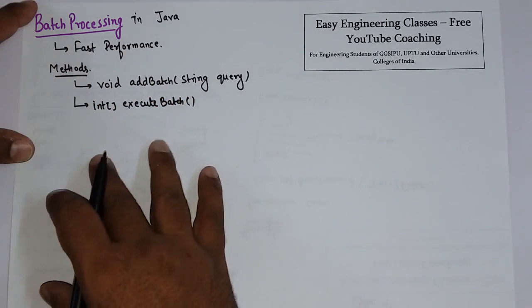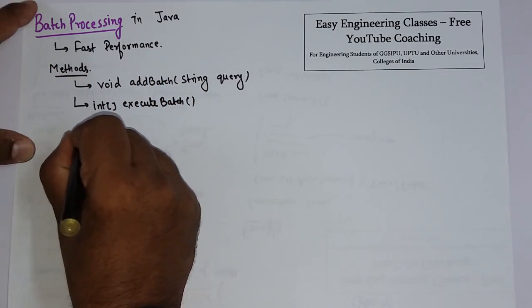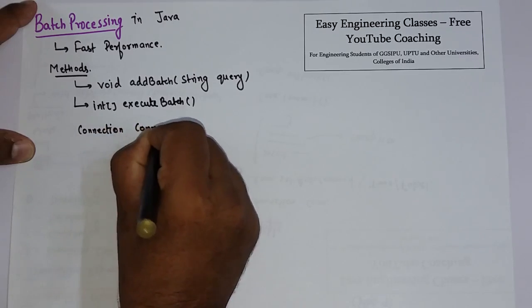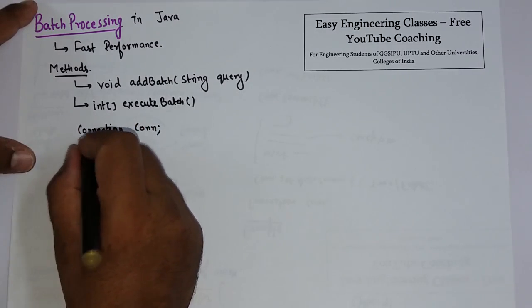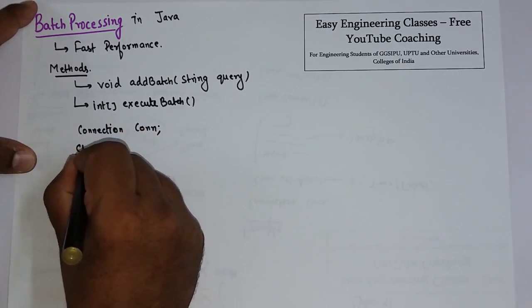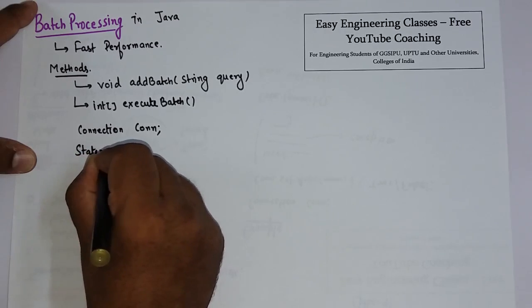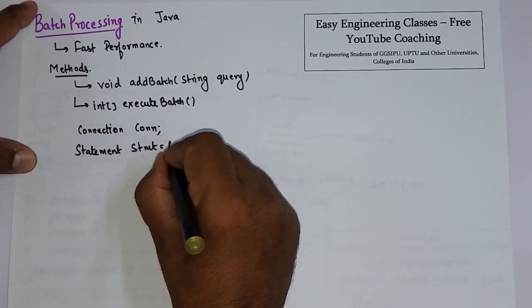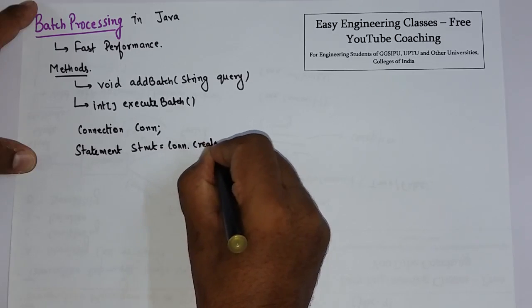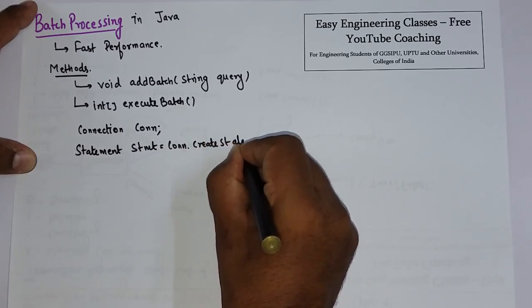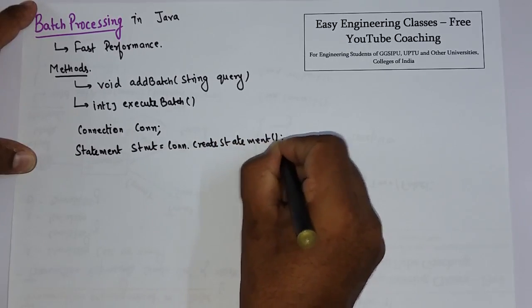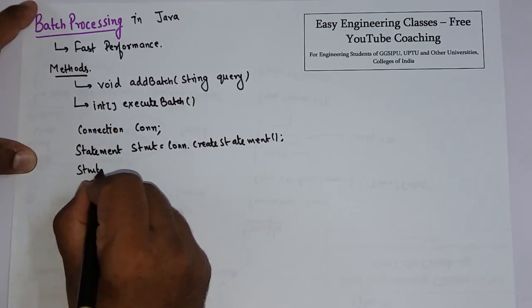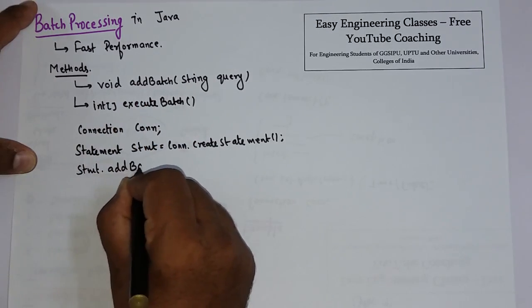Now let's see how batch query works. I am starting with the connection part. Suppose I have created a Connection object cn. Then you have to create an object of Statement: Statement stmt equals con.createStatement(). Then we will use the addBatch method: stmt.addBatch().